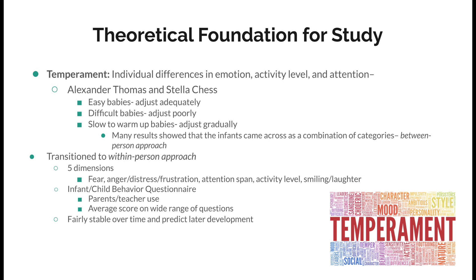After working with this approach for a while, they transitioned into the within-person approach. This consisted of five dimensions and five traits that all infants or children possessed. They then created the infant-child behavior questionnaire, which would be used by parents, teachers, or scientists doing research on temperament. They would average these scores after asking a wide range of questions. Within their research, they found that all of these questions and scores resulted in a fairly stable pattern over time and could later predict development.